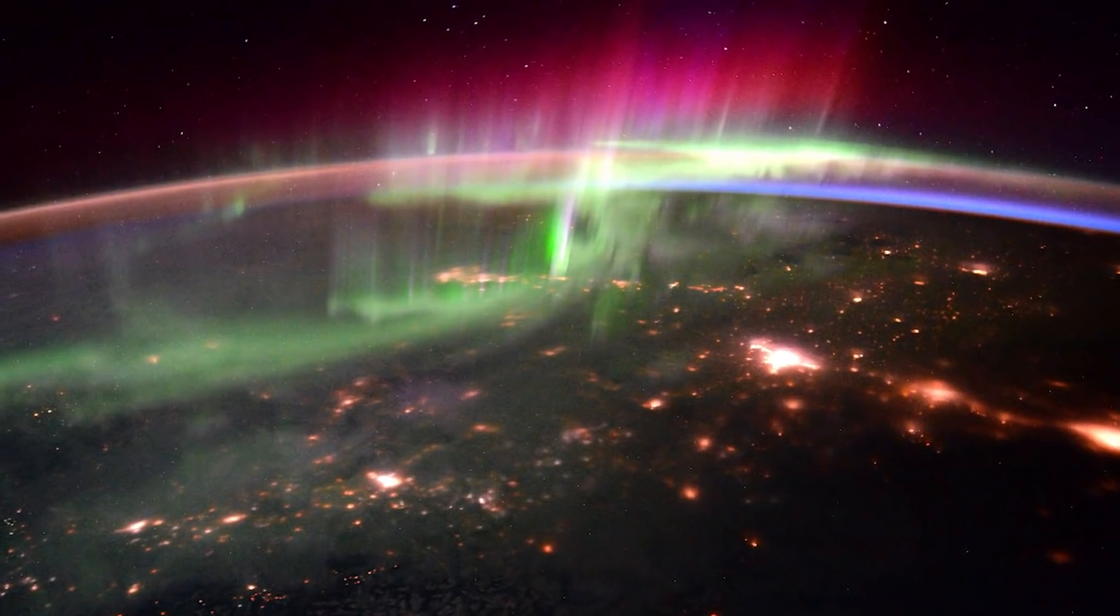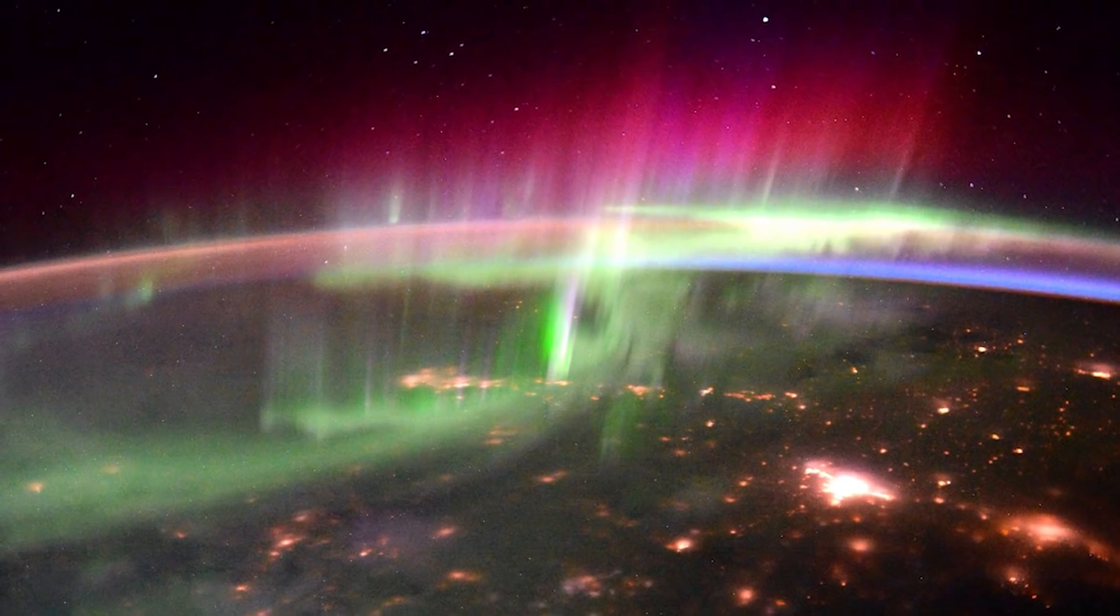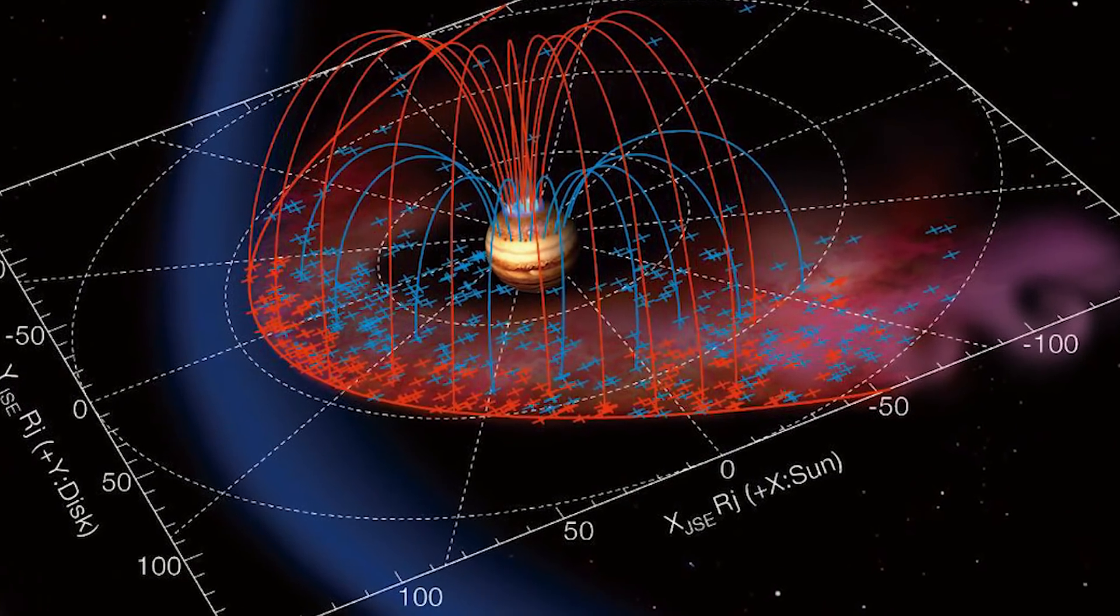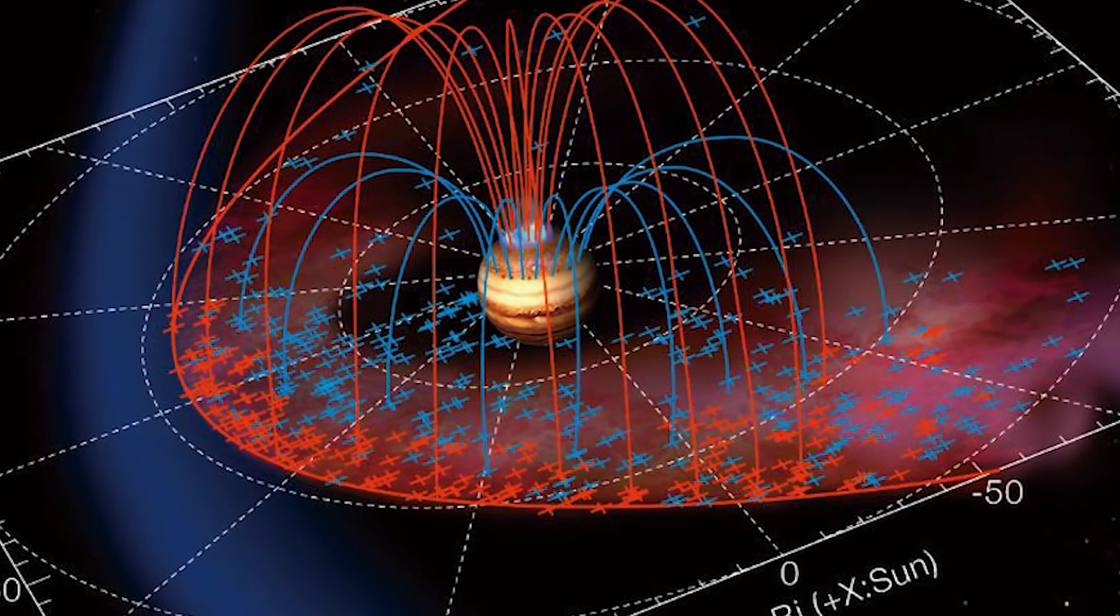The auroras on Earth mirror each other because the magnetic fields on Earth are similar at each pole. X-ray auroras have only been detected on Jupiter, not on other gas giants like Saturn.